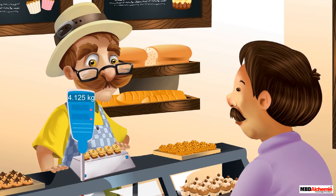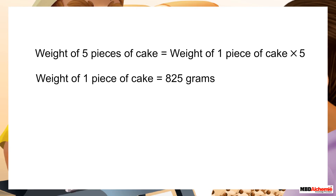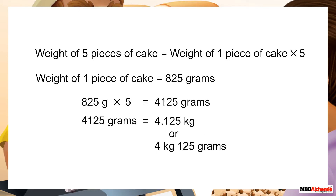Uncle Joe replies: one piece of cake weighs 825 grams, therefore five pieces of cake weigh 825 grams multiplied by 5, that is 4125 grams. We can also express this as 4 kilograms and 125 grams.